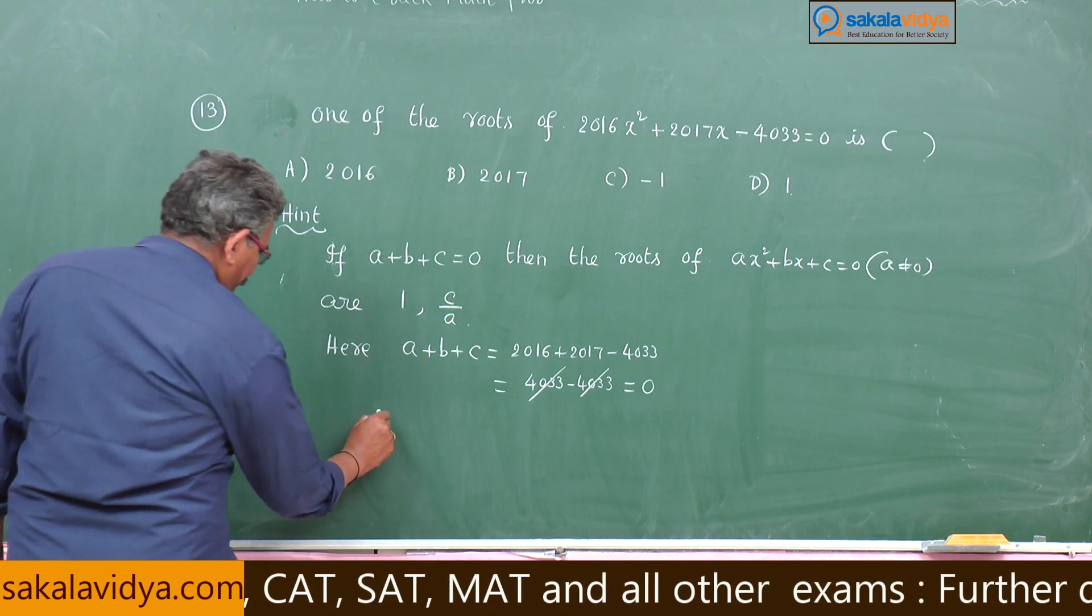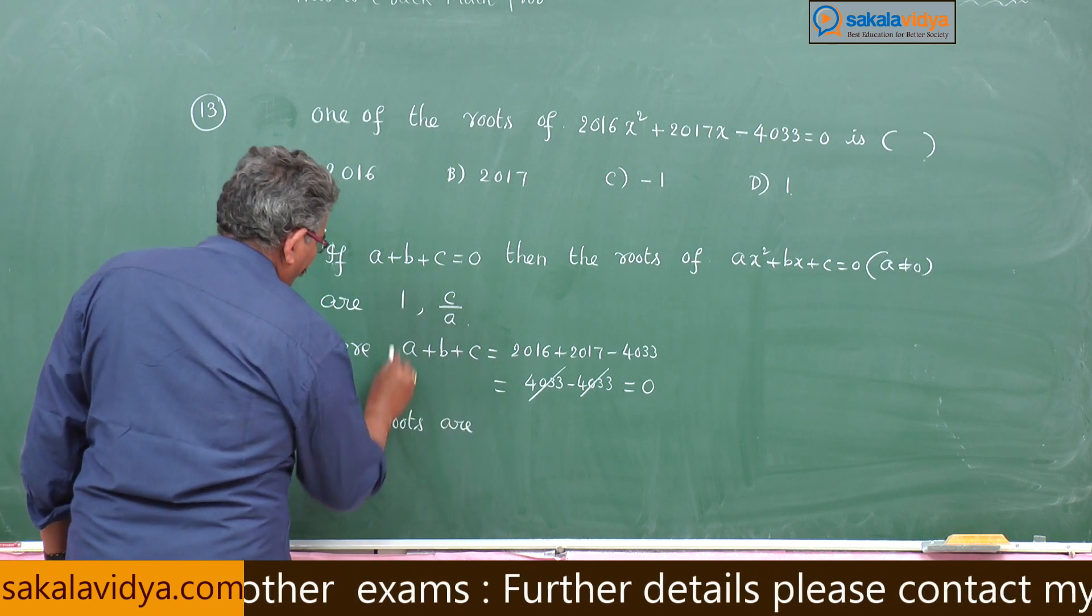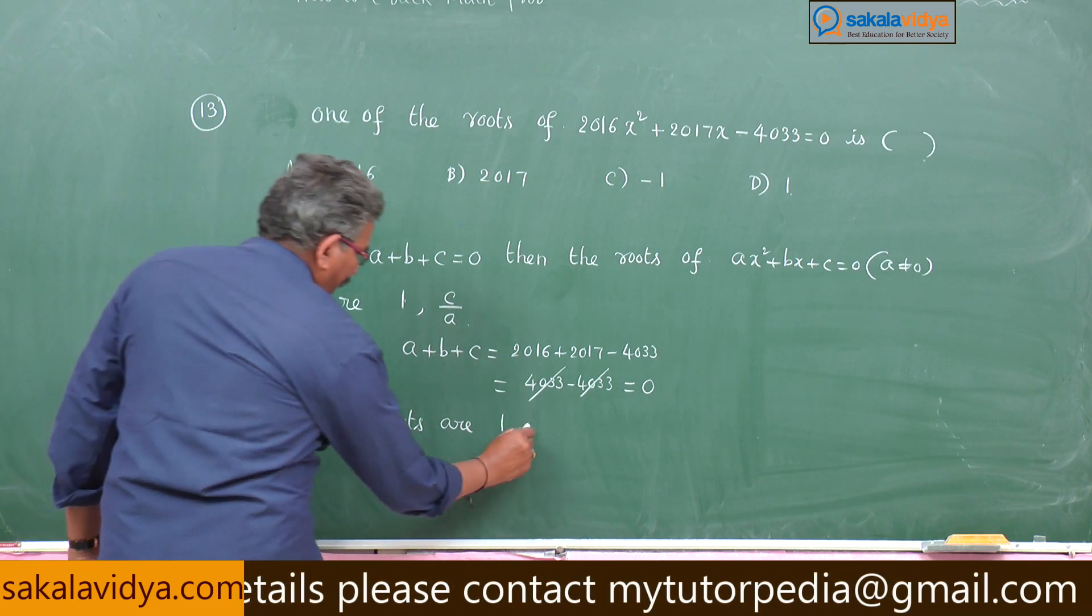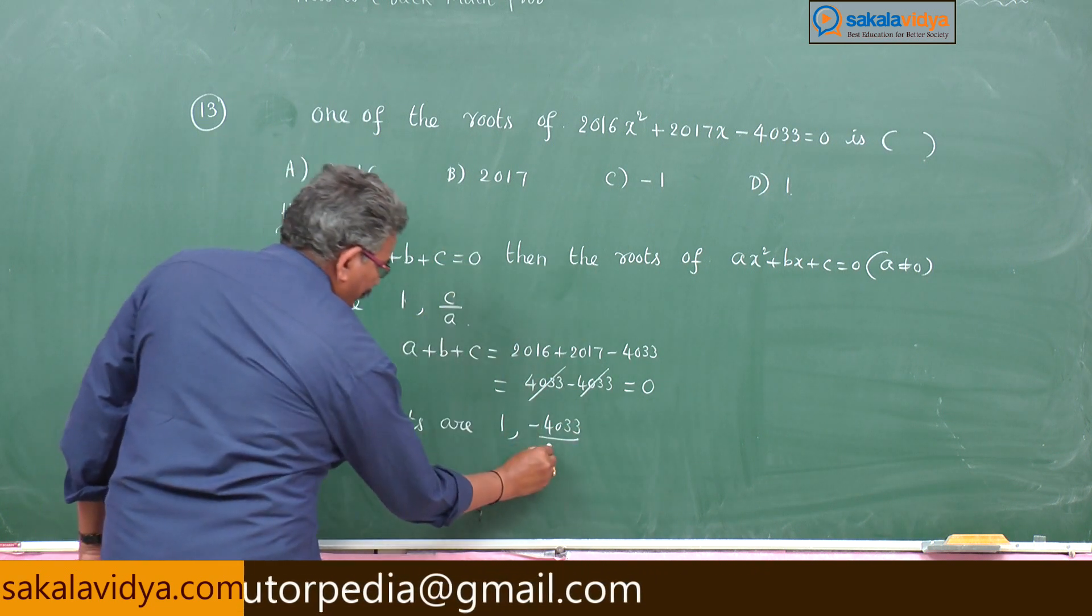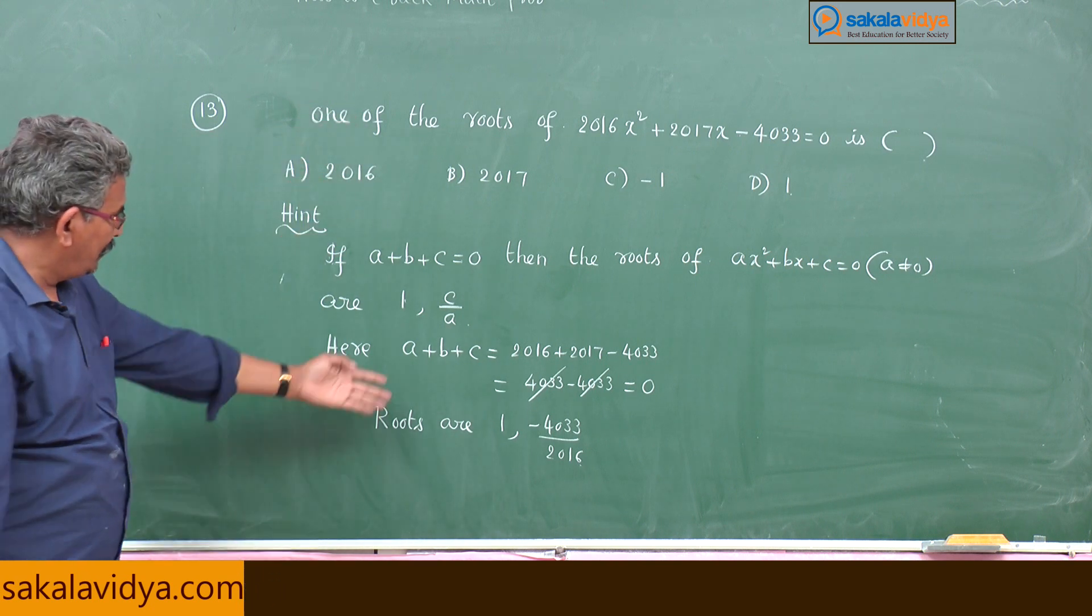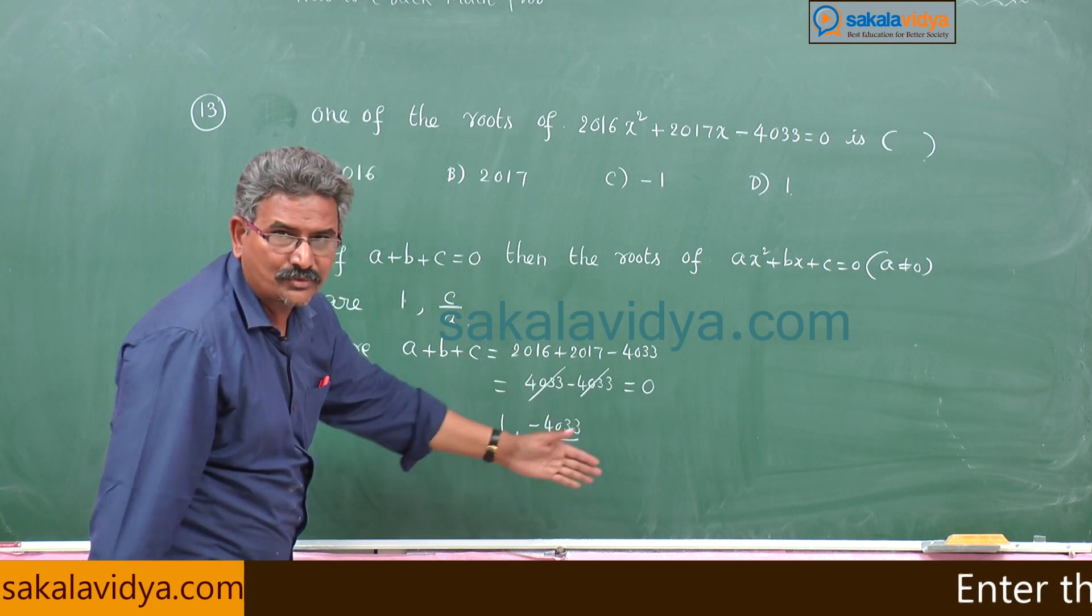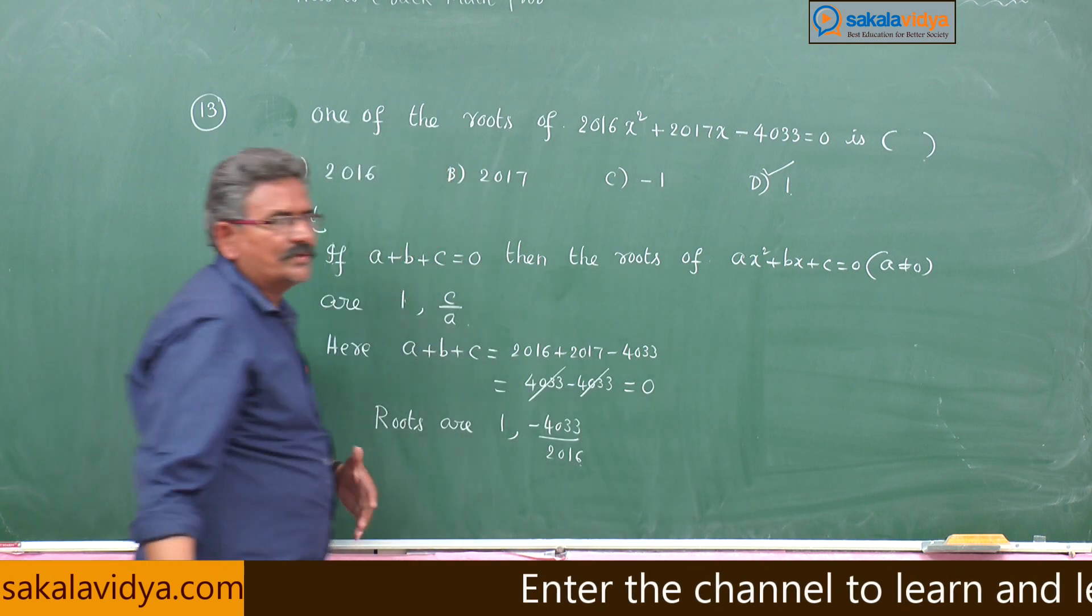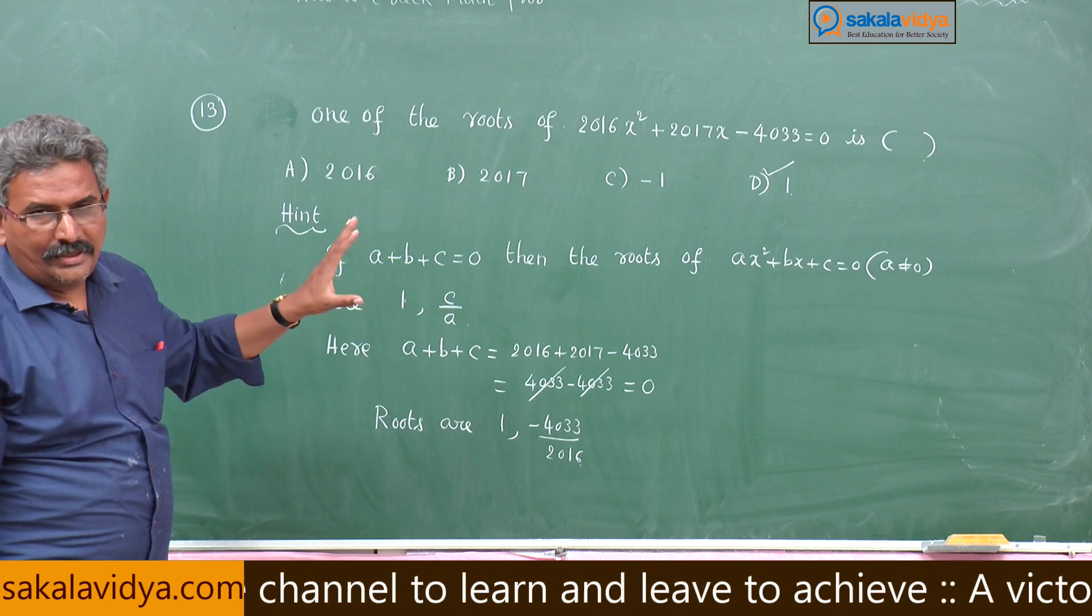As it satisfies the condition, the roots are 1 and c by a. What is c? Minus 4033 by x square coefficient 2016. But here we are asked one of the roots - one of the roots may be 1 or minus 4033 by 2016, but 1 is there. So first one here, d is our option.